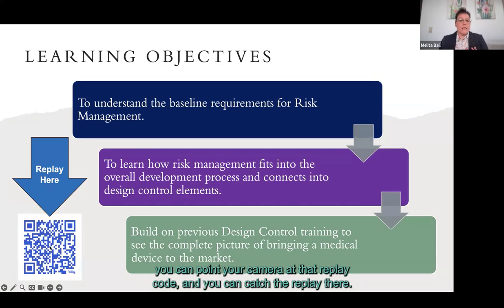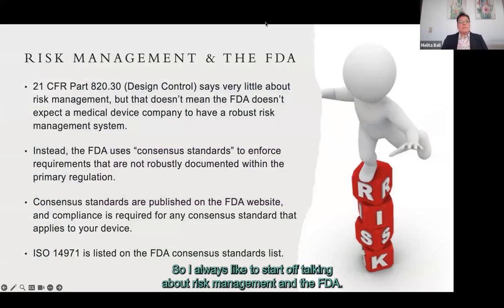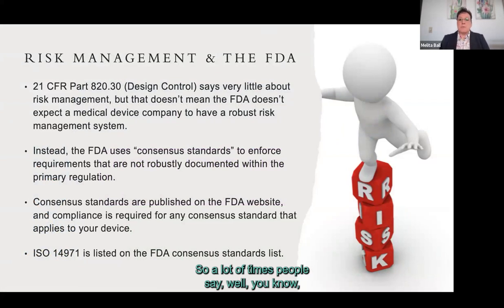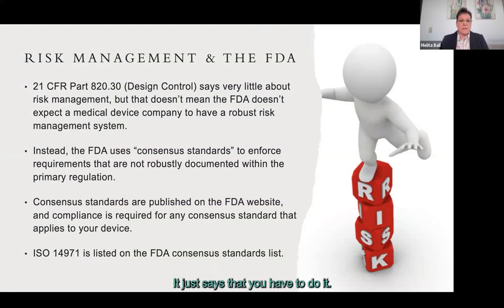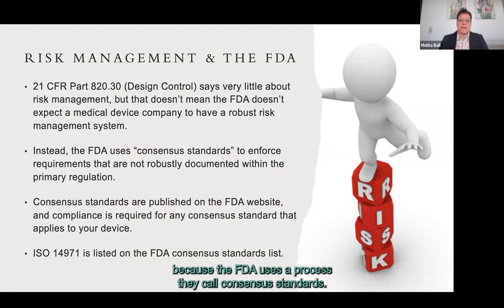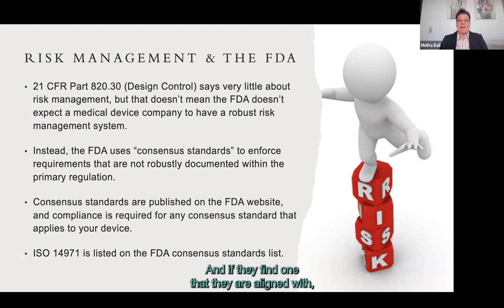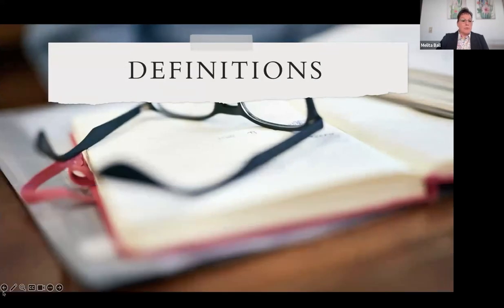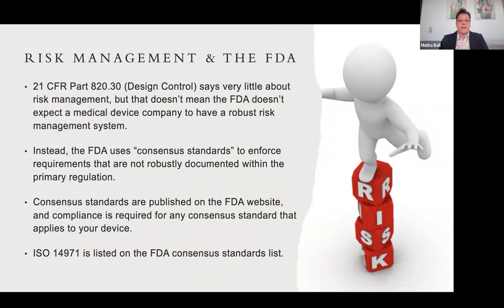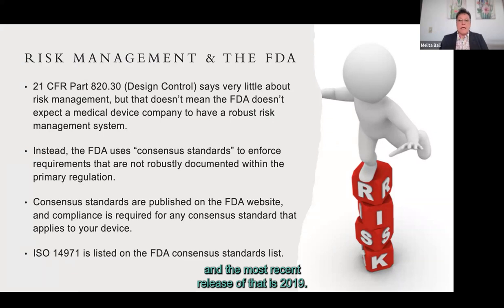I always like to start by talking about risk management and the FDA. A lot of people say they've read 21 CFR Part 820.30 for design controls and it doesn't say a whole lot about risk management — it just says you have to do it. There's a very specific reason for that. The FDA uses a process called consensus standards: they scour the world for the best standards, and if they find one they're aligned with, they add it to a consensus standards list and simply point people to that standard.